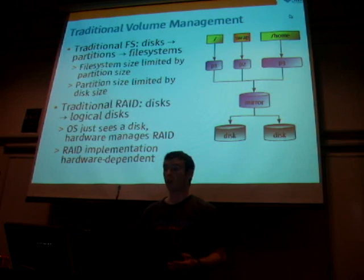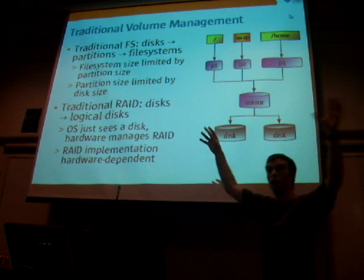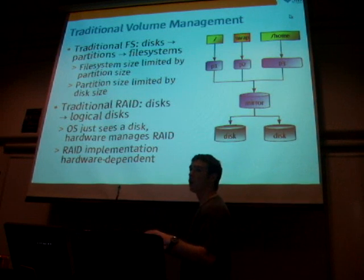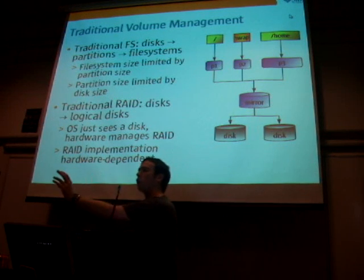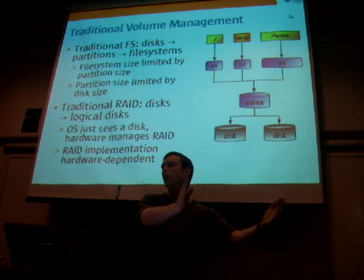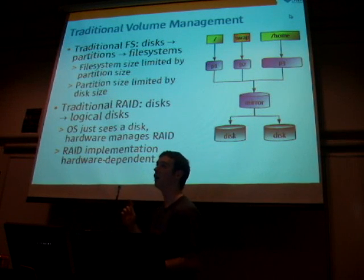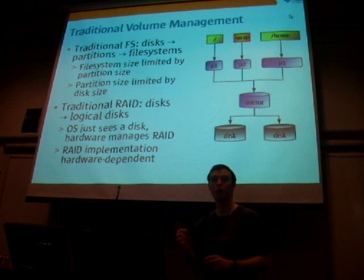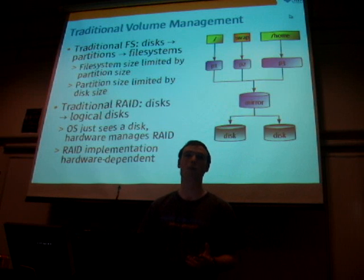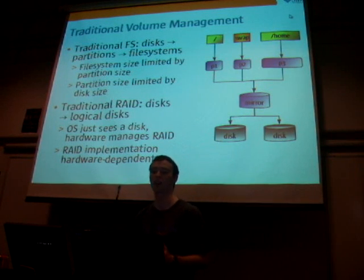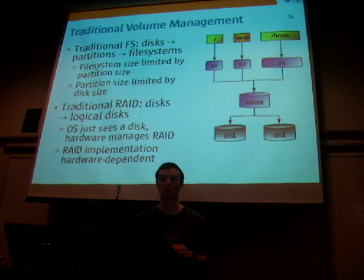In a traditional file system you split that up into partitions — partition one, partition two, partition three — and then you put the file systems in there. That means at install time you have to decide: I want a one gig swap partition, a 16 gig root partition, and so on. You have to know in advance how big those file systems are going to be. And if you find yourself needing to change the size of those partitions, you've got a problem because you have to use partition resizing tools, and they're never quite guaranteed to work without screwing something up.